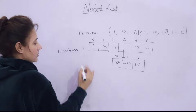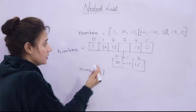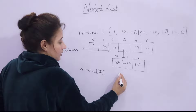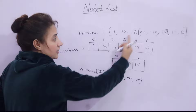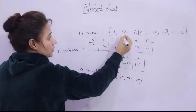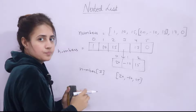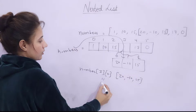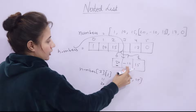To access elements, you use the list name with the index in subscript. numbers[0] gives 1, numbers[1] gives 10, numbers[2] gives 15, numbers[3] gives the inner list [20, -10, 15], numbers[4] gives 17, numbers[5] gives 0. To access an individual element inside the nested list, you use a second index: numbers[3][0] gives 20, numbers[3][1] gives -10, and slicing is also possible.